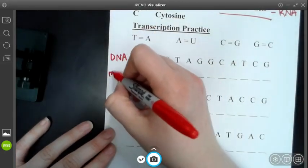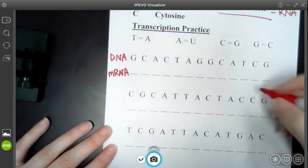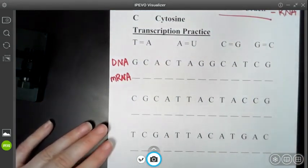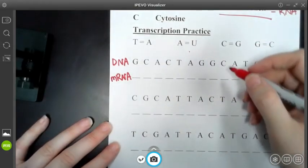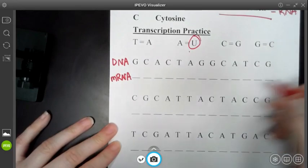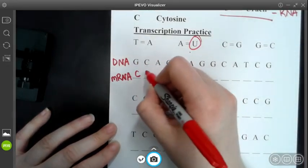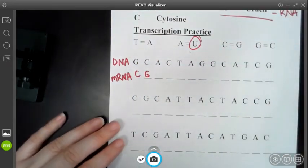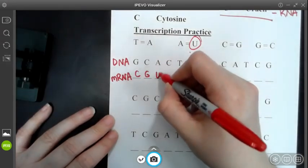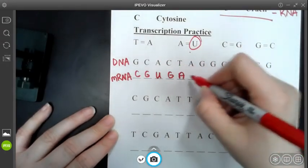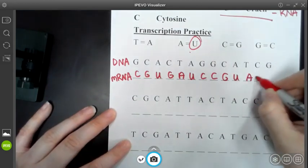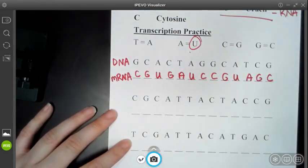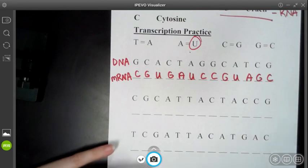Now transcription is when I take my strand of DNA, and I'm going to create an mRNA strand. I do it the same way I did the complementary DNA basis, except now, instead of going A to T, I'm going A to U instead. But my G's and C's don't change. So A is going to go with U. This is a G, A, U, C, C, G, U, A, G, and C. So that is all there is to transcription.